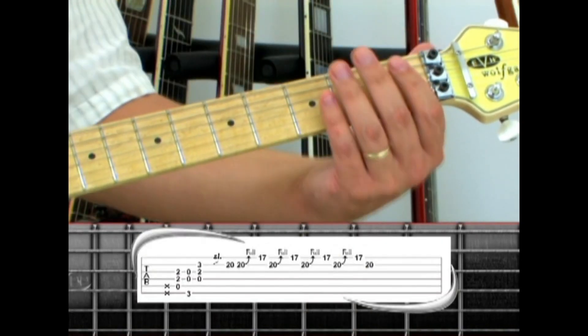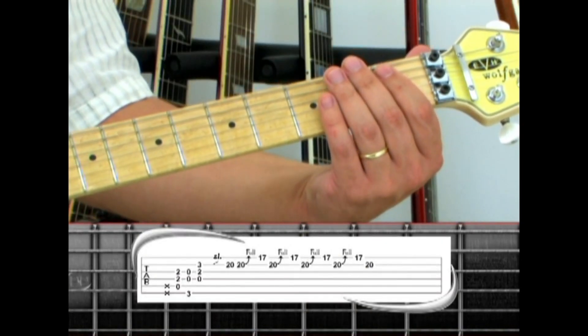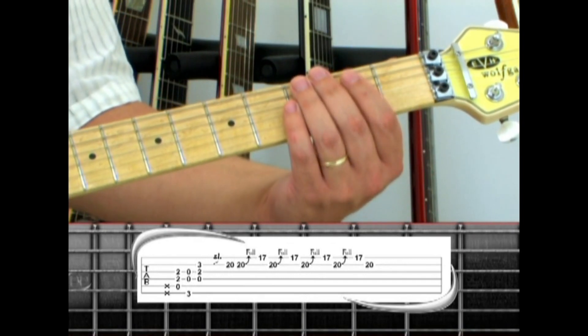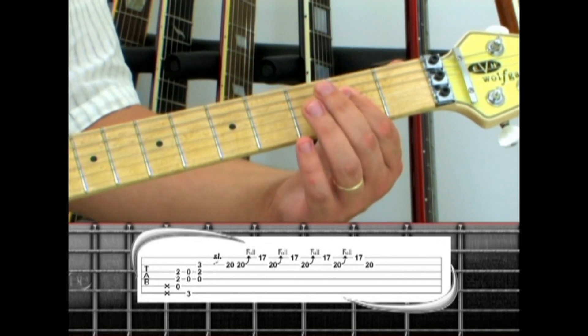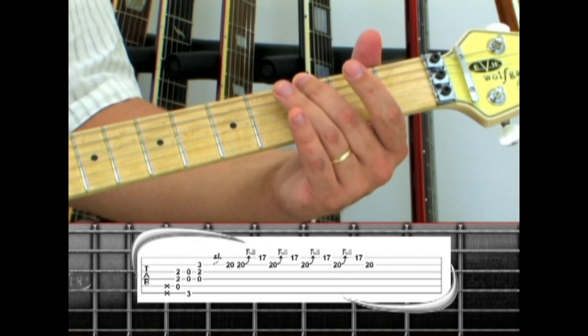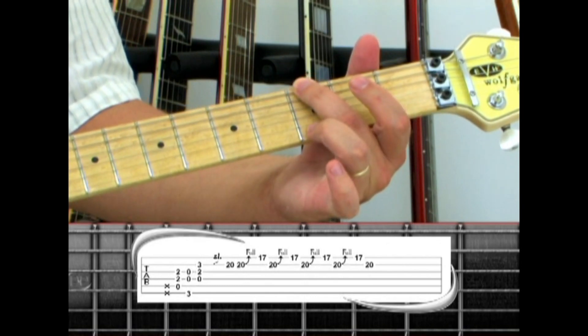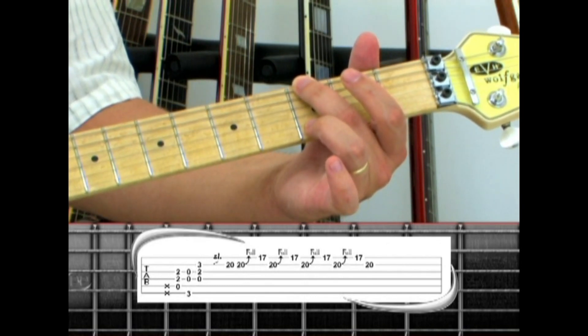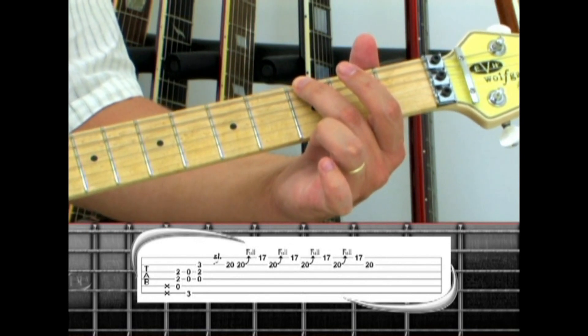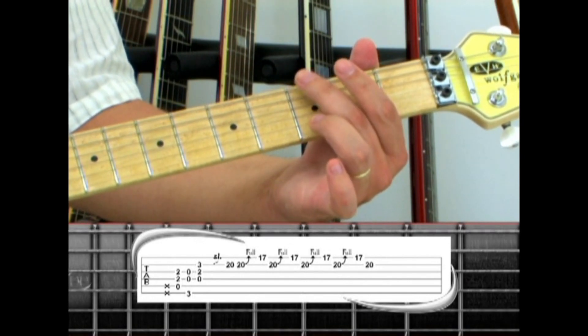Lightly touch the fifth and sixth strings and pick with an upstroke to start off phrase five. Next play a downstroke on an open A5 power chord. Switch to G5, sixth string third fret played with the middle finger. Add to that the fourth and third string open. The fifth string is prevented from ringing out by the bottom skin of your index finger.